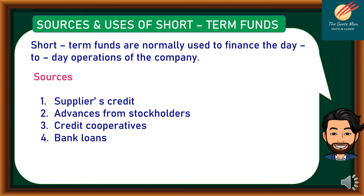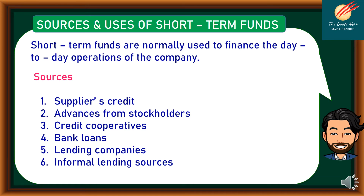Number four, bank loans. Banks can provide both short-term and long-term loans, and some also provide credit facilities not just for big corporations but also for small and medium enterprises. Number five, lending companies. There are small lending companies which cater normally to small and medium enterprises. The lending process is much faster compared to banks, but they charge higher interest. And finally, informal lending sources such as '5-6' — this is a very expensive source of financing and should be avoided.